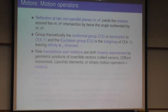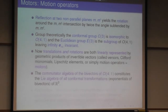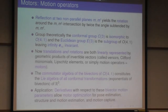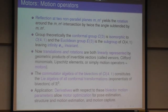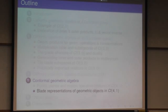And so, translations and rotations, they are now linearly represented. In this algebra, this is also called motion operator motor. And the commutator algebra of the bi-vectors in this algebra is the Lie algebra of the conformal transformations. And application now, you can compute derivatives with respect to bi-vector motion parameters from the Lie group here and do motor optimization. This is very efficient in applications.